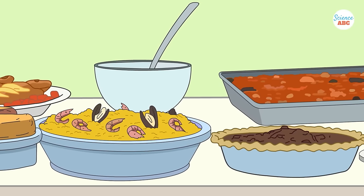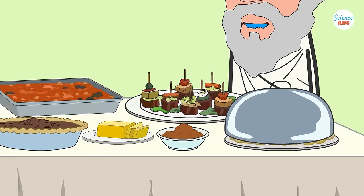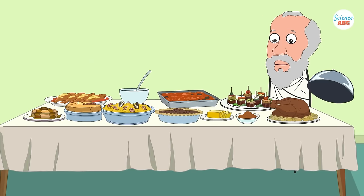He believed that the properties of materials depended on the type of atomos they were composed of. For example, sour or sharp-tasting things were made of particles with pointy edges, sweet stuff was made of more rounded or smooth atoms, and metals were composed of hard atomos.